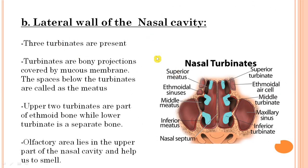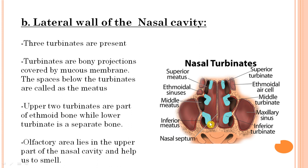Looking at the lateral wall of the nasal cavity, you will see three turbinates — bony projections covered by mucous membrane, also called conchae. The space below each turbinate is called the meatus of that respective concha: inferior concha with inferior meatus, middle concha with middle meatus, and superior concha with superior meatus. Different sinus openings drain into these meatus, which we will discuss shortly.